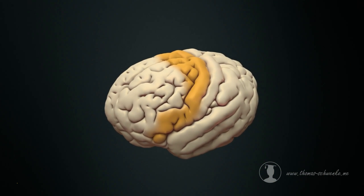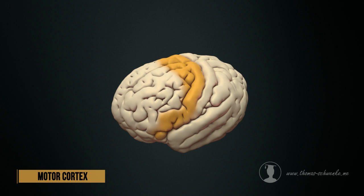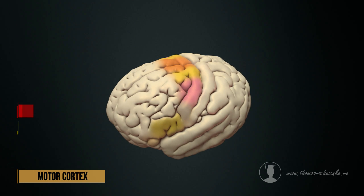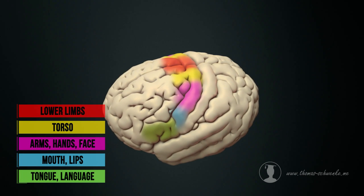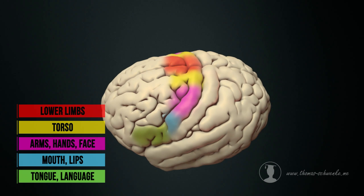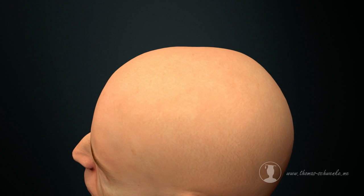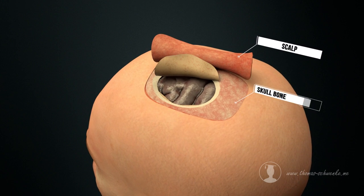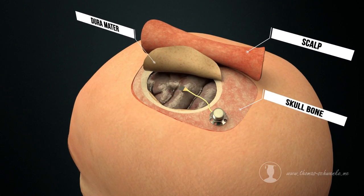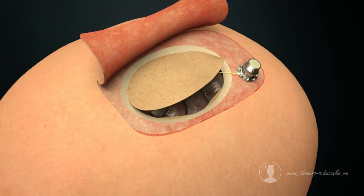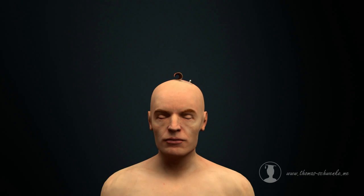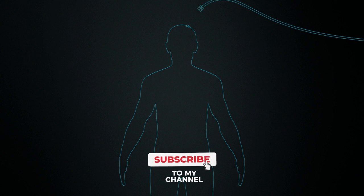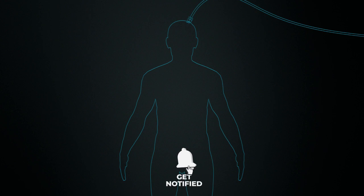Numerous areas in the brain are responsible for the voluntary movement of the body. One of the most important areas is the motor cortex. In this region, certain nerve cells are responsible for the movement of individual body parts. For this reason, a brain-computer implant only needs to be placed in the proper position to be able to perform rudimentary movements. An external device can then be connected to the implant, allowing currents to be generated which stimulate the relevant area of the brain, ultimately leading to movement of the body part.